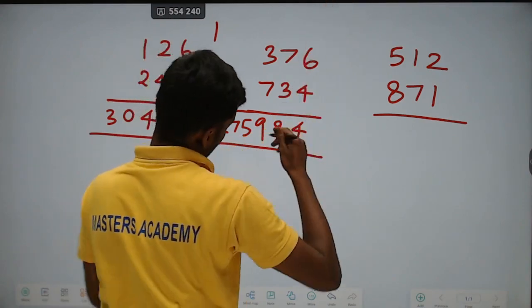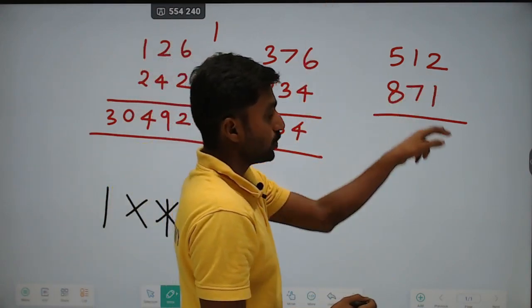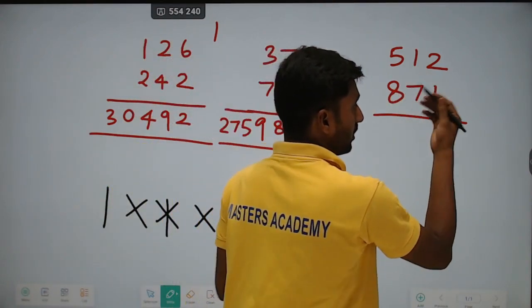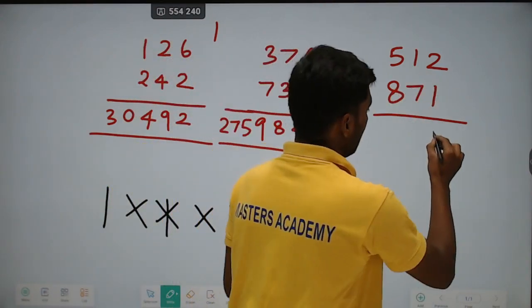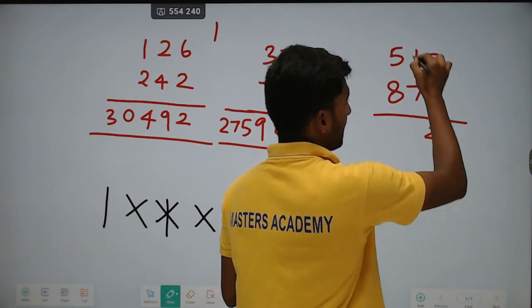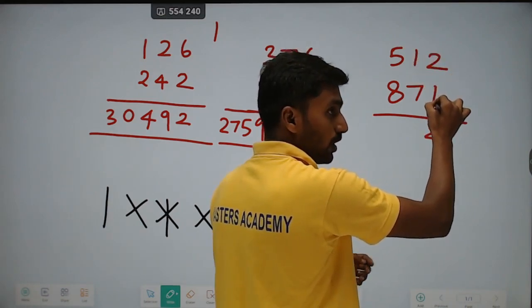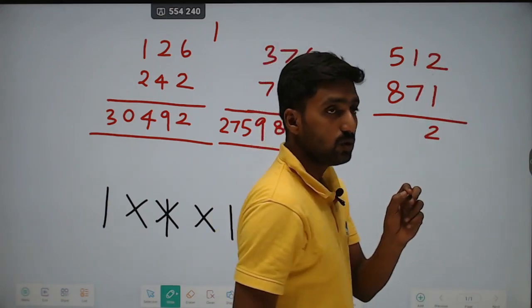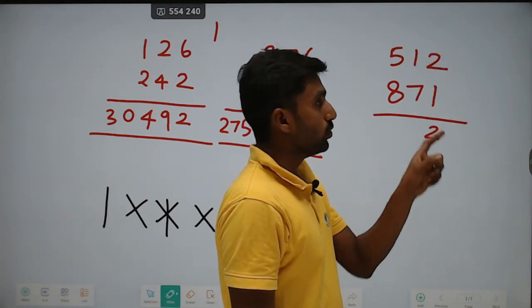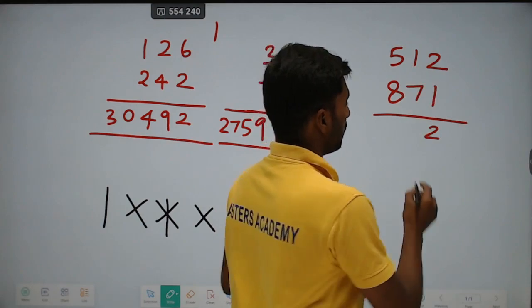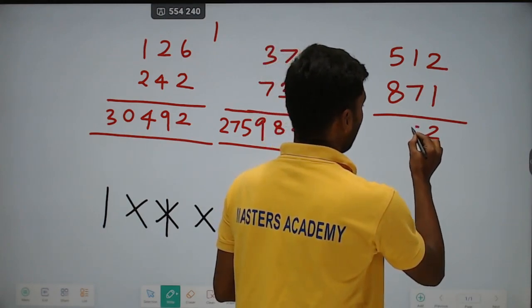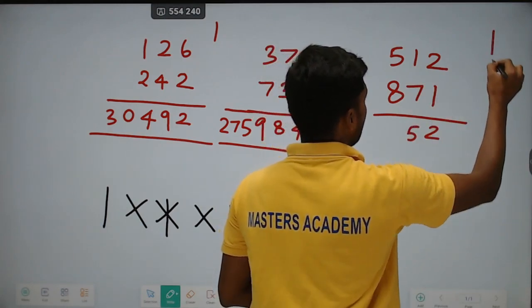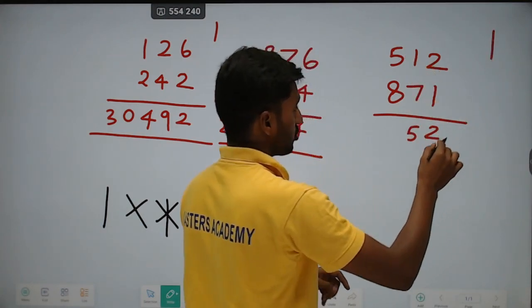Going to the next example. Straight: 2 into 1, no carry, it is 2. Cross multiplication: 1 into 1 plus 7 into 2 is 14, plus 1 is 15. Write 5, carry 1.